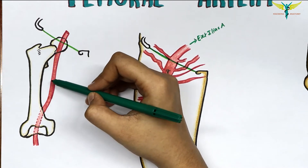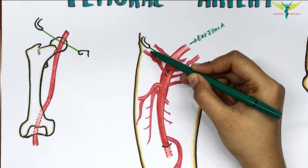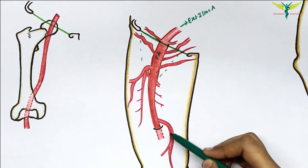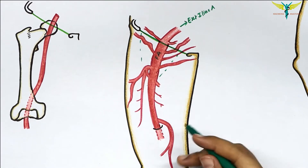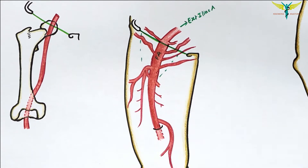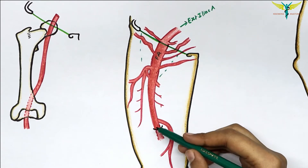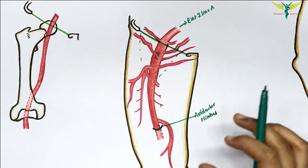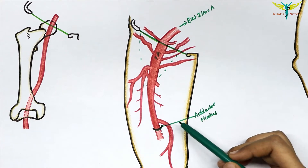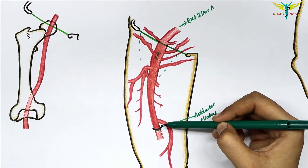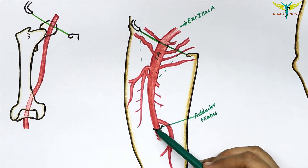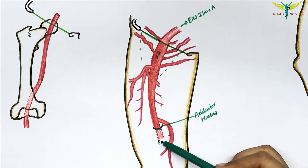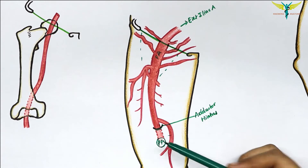The femoral artery runs through the femoral triangle and also goes through the adductor canal. At the lower end of the adductor canal, that is at the junction of the middle one-third and the lower one-third of the thigh, it leaves the thigh through the adductor hiatus. The adductor hiatus is a tendinous opening in the adductor magnus muscle, and the femoral artery continues as the popliteal artery in the popliteal fossa.